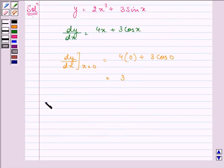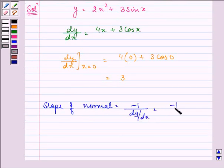We know that slope of normal = -1/(dy/dx). That will be -1/3.